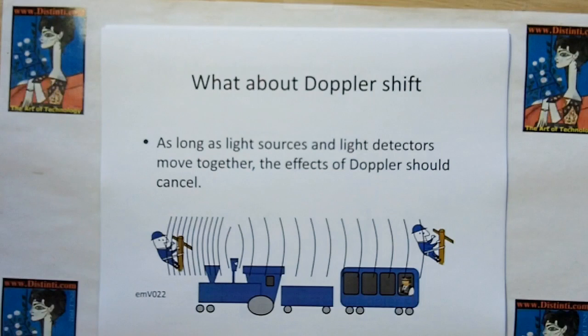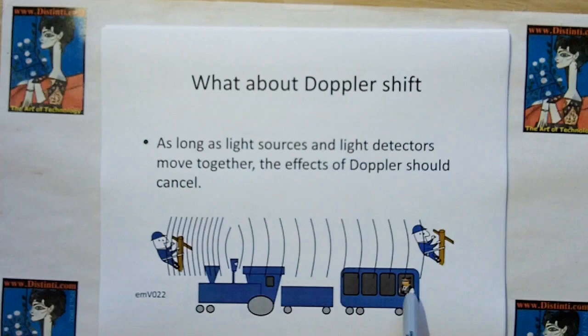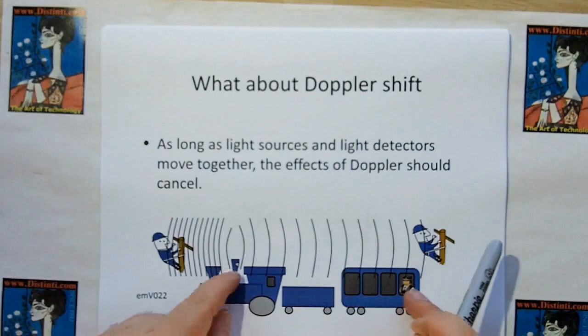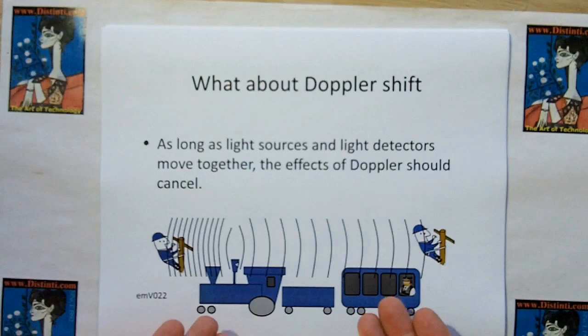What about Doppler shift? If we're in motion, there should be a Doppler shift — right? No. As shown in video 22, as long as the source and the observers move together, they will not experience a Doppler shift. Objects not moving with the reference frame of the source and detector will experience Doppler shift. But since the Michelson-Morley experiment is on a granite slab where all sources, reflectors, mirrors, and detectors all move together, we should not expect any Doppler shift.